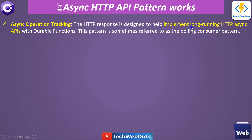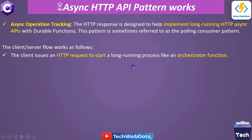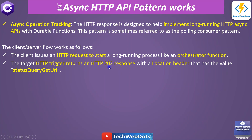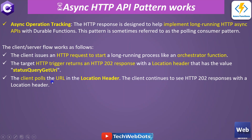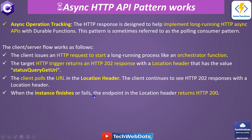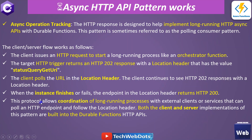Now let's understand how the whole thing works — async operation tracking. The HTTP responses are designed to help implement long-running HTTP async APIs with durable functions. This pattern is sometimes referred to as the polling consumer pattern. The client-server flow works as follows: the client issues an HTTP request to start a long-running process like an orchestrator function. The target HTTP trigger returns an HTTP 202 response with a location header containing the status query get-URI. The client polls the URL in the location header. When the instance finishes or fails, the endpoint in the location header returns HTTP 200.